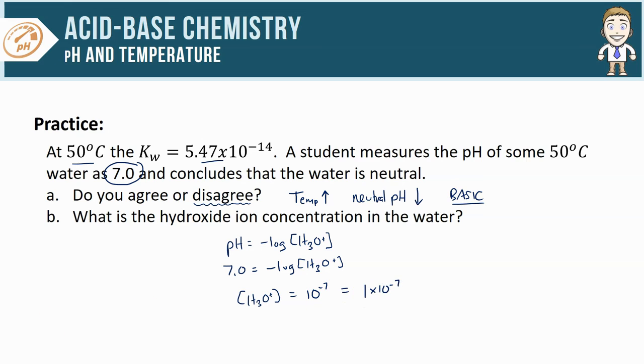Now that I know the H3O+ concentration, I can plug it into the equilibrium expression. Remember to use the new K value, 5.47 × 10^-14, since that's the temperature my water is at. This makes the final hydroxide concentration 5.47 × 10^-7.